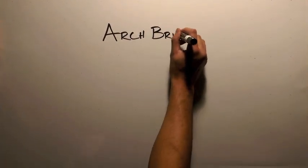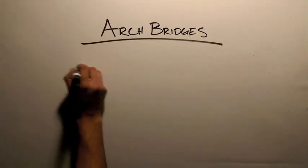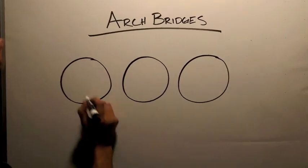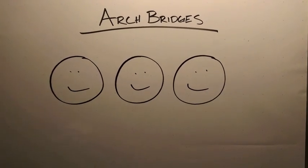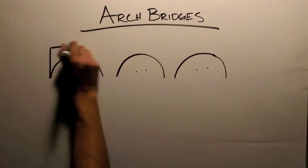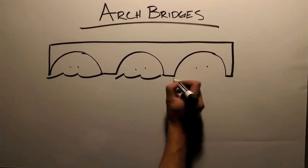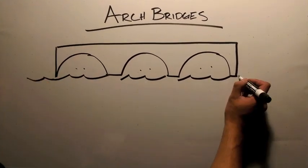Arch bridges are made up of half circles that distribute the load gradually toward each side to the ground. They look impressive, but it's important that the connection to the ground has support from the sides, otherwise the forces will break the arch.